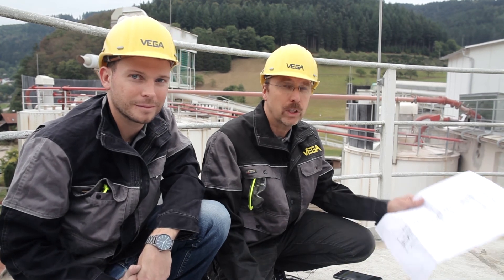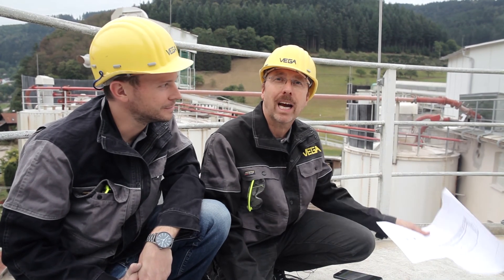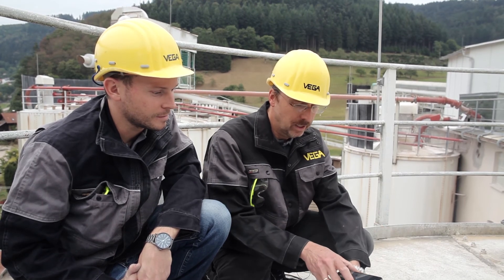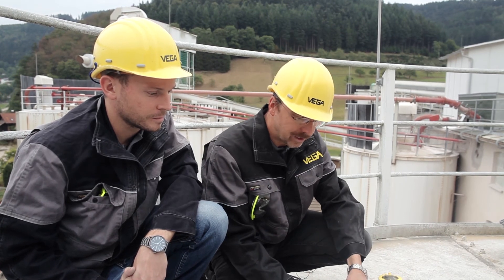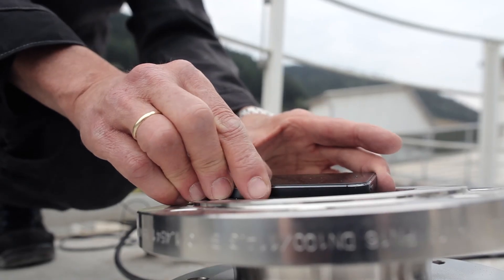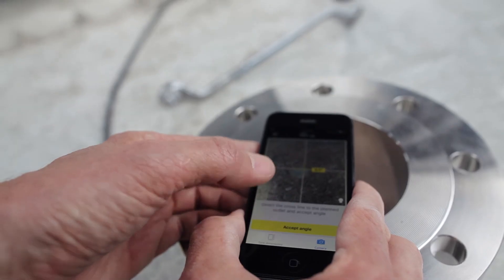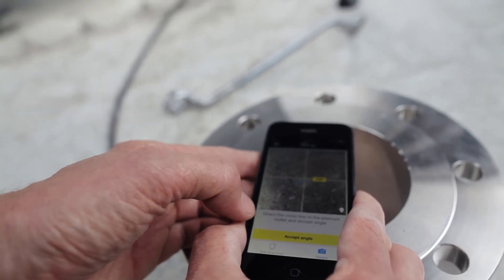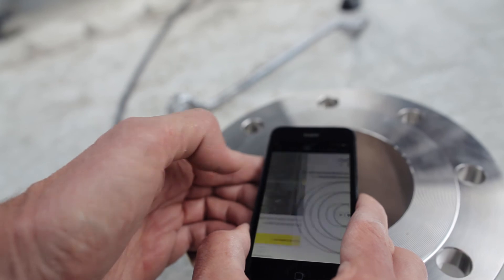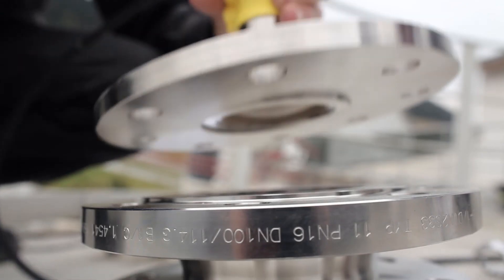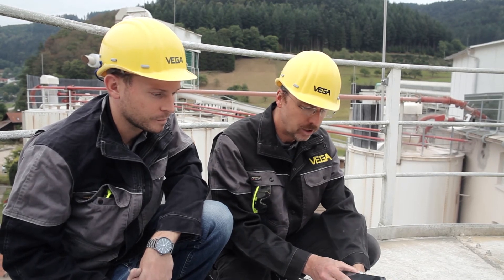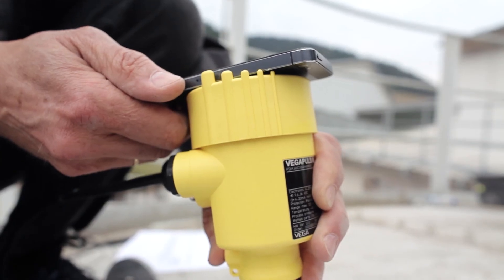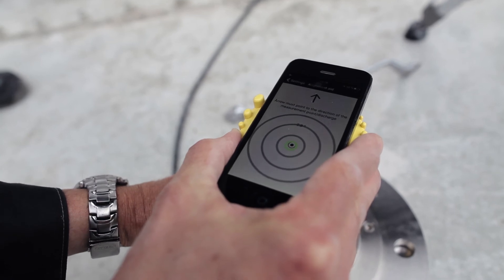By the way, if you don't have a drawing, you can use the camera function of your smartphone to adjust the sensor. Just put the sensor in front of the flange, position it to the center, store the angle, and then mount the sensor, aim the flange, fix it, and everything is done.